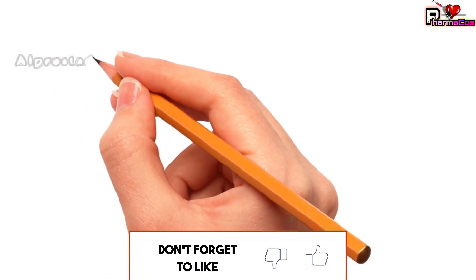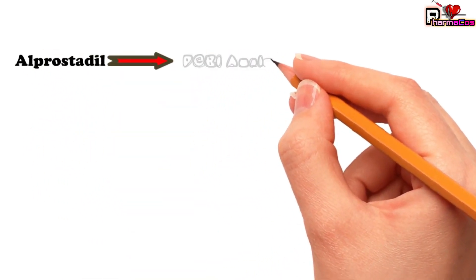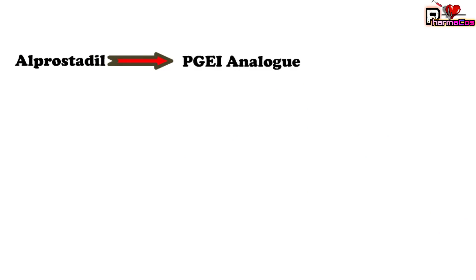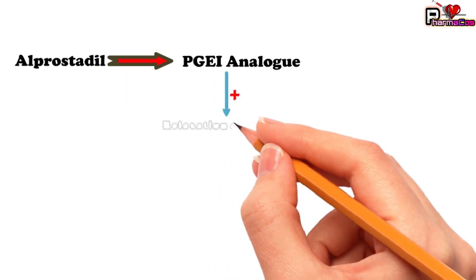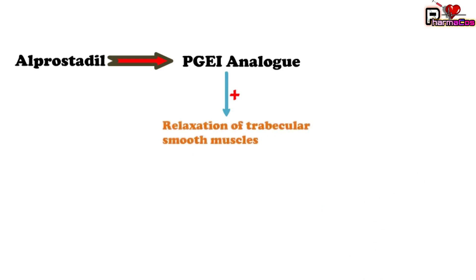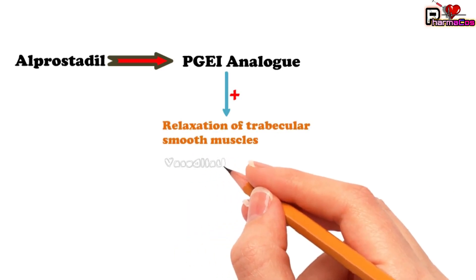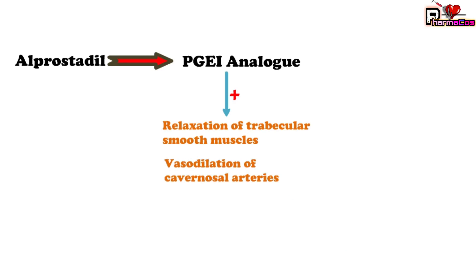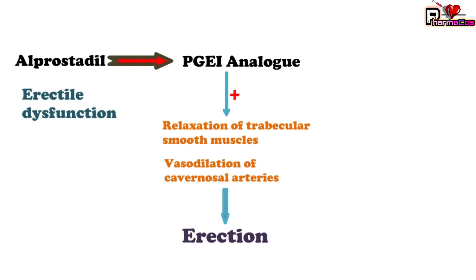The fourth drug is alprostadil, a prostaglandin E1 analog. It acts on EP receptors — prostaglandin E receptors — thereby producing relaxation of smooth muscle and vasodilation. It produces relaxation of the trabecular smooth muscles and erectile tissues, as well as vasodilation of the cavernosal arteries. Because of these two activities, alprostadil can increase erection of the erectile tissue, so this drug is used in the treatment of erectile dysfunction and also for its diagnosis.